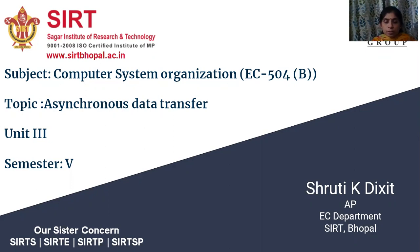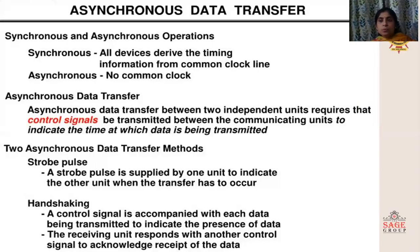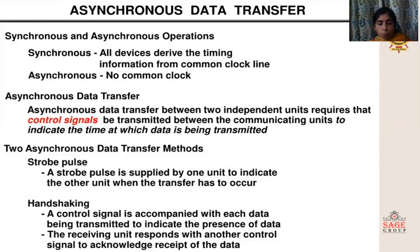As we have discussed the different data transmission methods — serial transmission as well as parallel transmission — serial transmission is again subdivided into Synchronous Transmission and Asynchronous Transmission. In case of Asynchronous Transmission, the data transfer happens between two independent units, and the data is sent in the form of groups with a start bit and stop bit. The timing is not important.